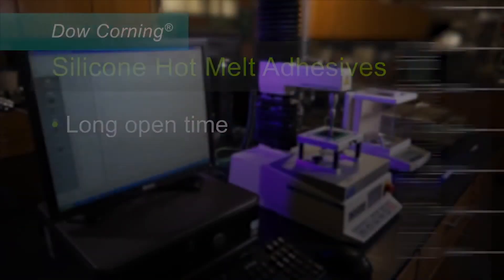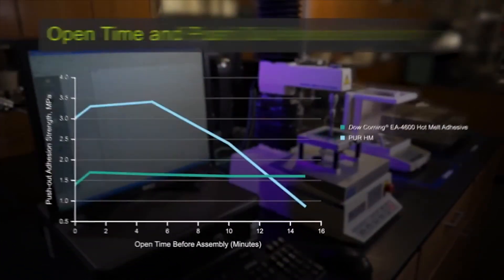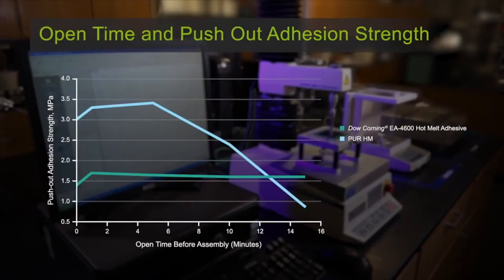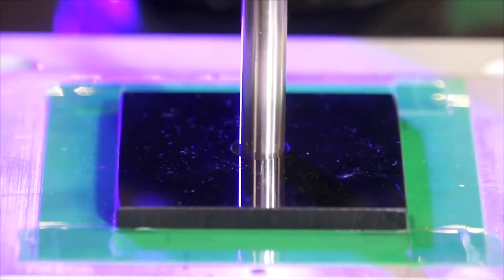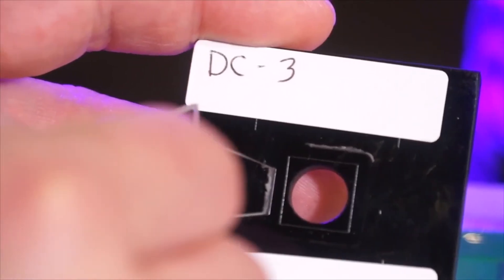Push-out adhesion is a measure of the amount of force needed to delaminate a cover piece that has been adhered to a substrate. This type of adhesion test is more representative of the application adhesion needs in the consumer electronics market.